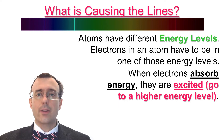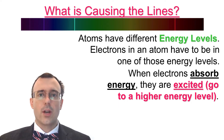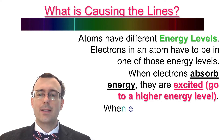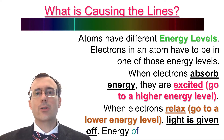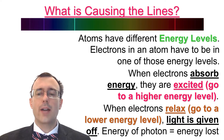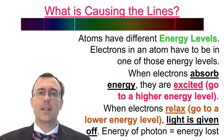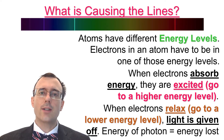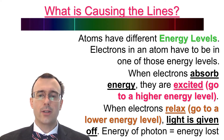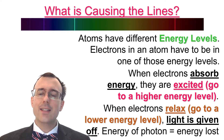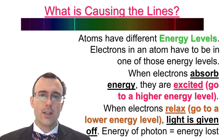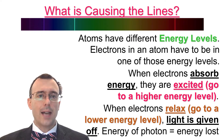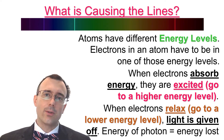The electrons don't stay in the higher energy levels — they don't like to be there, so they eventually come back down. When they come back down, the electrons relax, meaning they go down to a lower energy level, and when that happens, light is given off. The light that is given off corresponds to the energy lost in the process. The energy of the photon given off is exactly the same as the energy lost by the electron as it goes down in energy level.